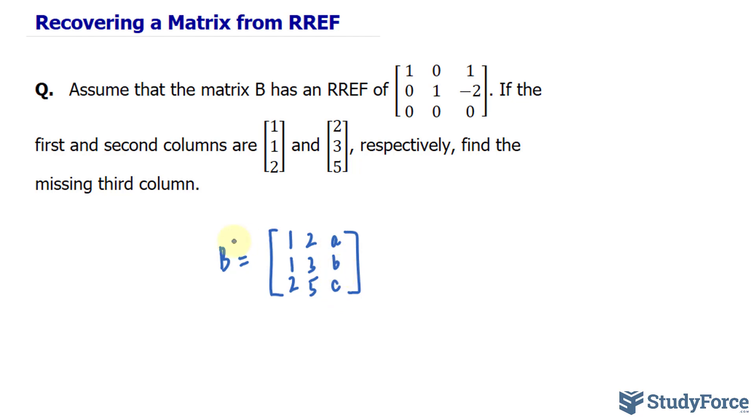And this matrix B has been row-reduced down to this one. So this has become 1, 0, 1, 0, 1, -2, 0, 0, 0.